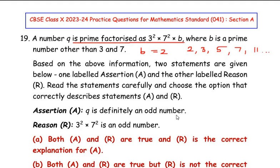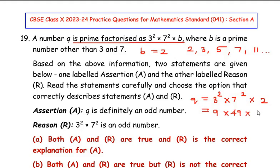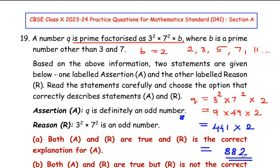The Assertion says q is definitely an odd number. Let's compute: q = 3² × 7² × 2. Now 3² = 9, 7² = 49, and 9 × 49 = 441. Then 441 × 2 = 882. This is not an odd number — it is even. So the Assertion that q is definitely an odd number is a wrong statement; the Assertion is not true.